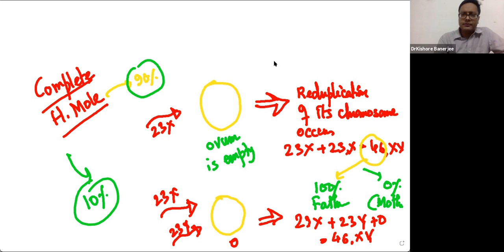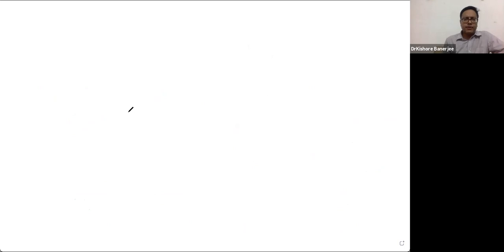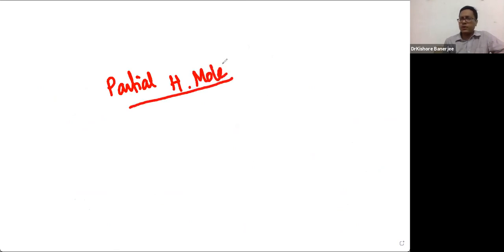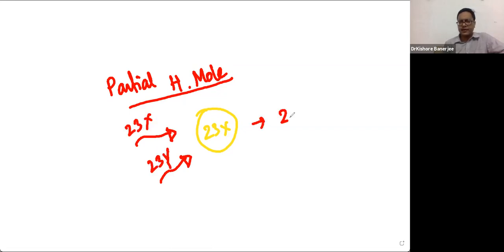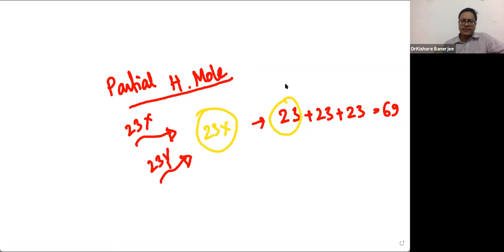If we come to partial mole, the story is a little different because in partial mole the ovum is not empty — the mother's contribution is there. The ovum has 23X, and in this case the ovum is usually fertilized by two separate sperms — say 23X and 23Y — so 23 plus 23 plus 23 equals 69. So 23 chromosomes are coming from the mother and 46 from the father.